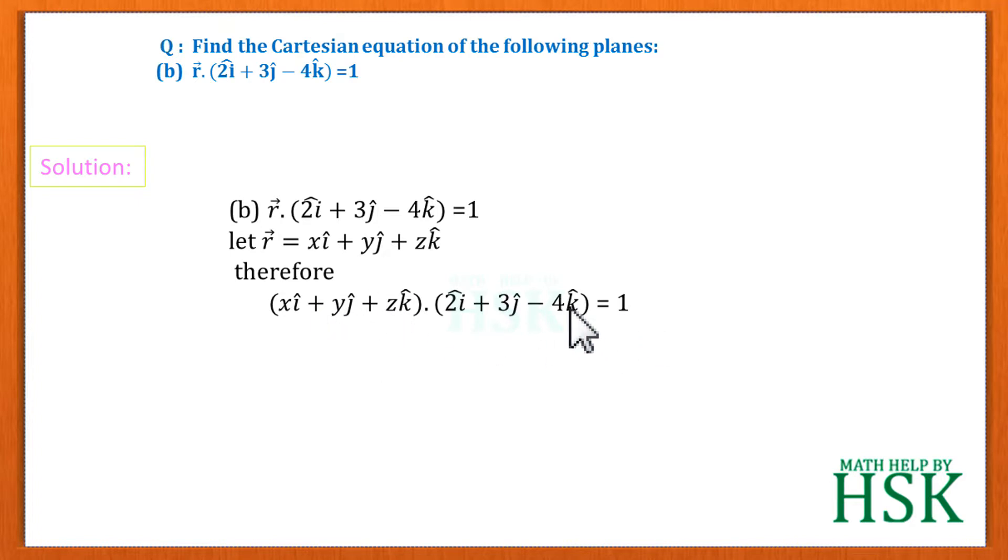We can easily take the dot product of these two vectors. So this will be equal to 2x, 3y, minus 4z. So 2x + 3y - 4z = 1 is the equation of the plane in the Cartesian form, which is the required answer for the second part.